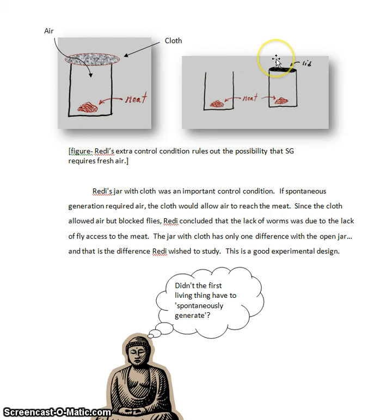Any jar that blocks the variable, then, is going to be a control condition. So the jar with the lid is a control condition, because it does not have the variable. Flies cannot get to the meat.